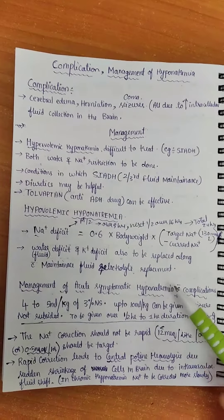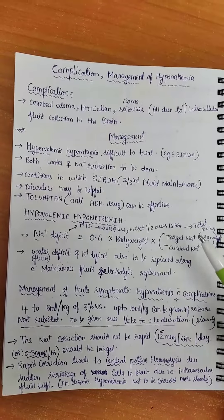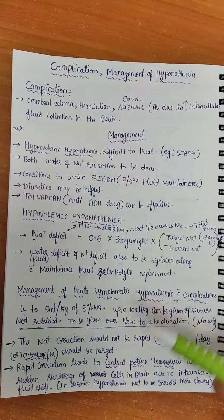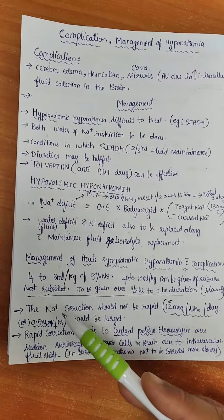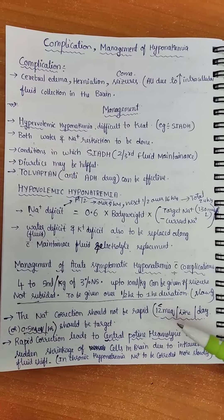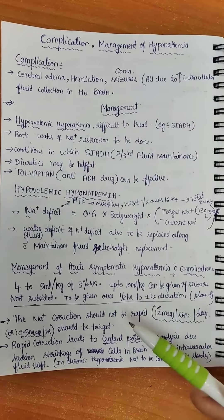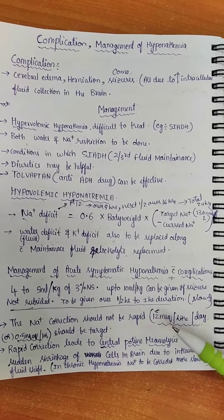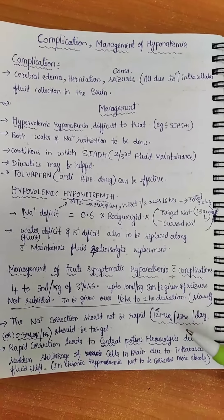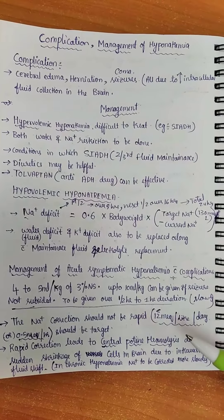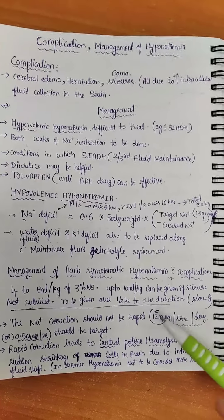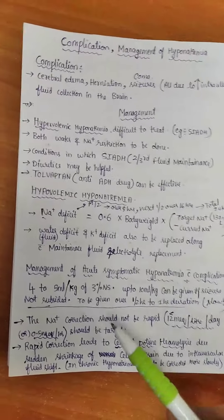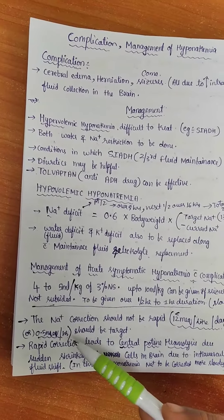After the bolus correction — whether in hypervolemic or hypovolemic hyponatremia — after the symptomatic correction by bolus, the remaining sodium correction should not be rapid. It should not cross 12 mEq per litre per day. We should always check the patient's sodium levels — it should not increase more than 12 mEq per litre per day or more than 0.5 mEq per hour.